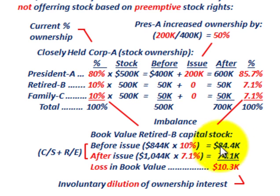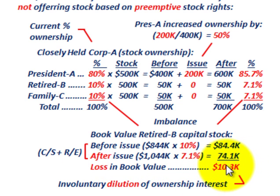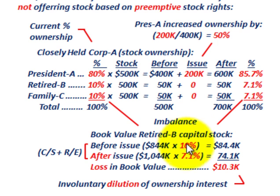This is where he claims he was injured. He had $84,400 before and ends up with $74,100 after. Retired shareholder B lost $10,300 in book value because of the involuntary dilution of the ownership interest. We're going to look at how this could be corrected with retired member B through preemptive stock rights.